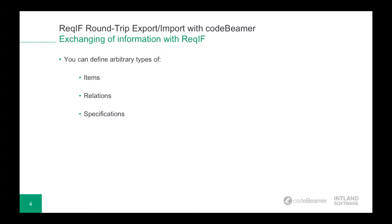In the exchange of information with ReqIF, you can define arbitrary types of items, relations, and specifications. Item types are similar to classes in object-oriented programming, tables in a relational database model, or trackers in CodeBeamer. There can be any number of item types in a ReqIF file, each having a different set of attributes — like user stories, use cases, requirements, test cases, and so on.